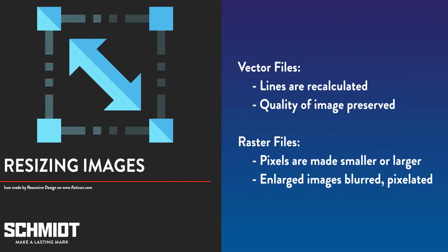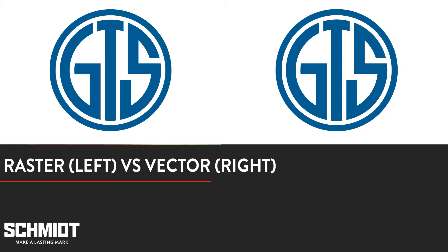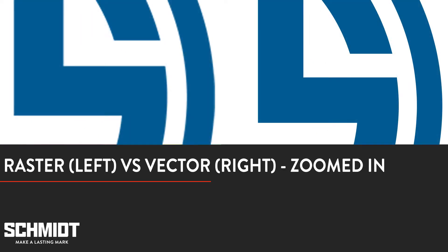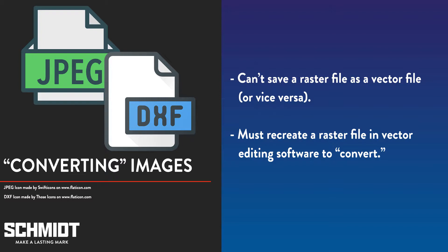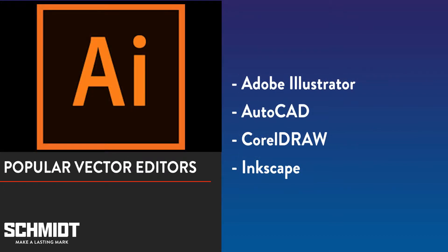Vector files are images in which software calculates and draws lines or vectors between points. Some of the most common types of vector files include encapsulated PostScript and drawing exchange format files. When you resize a vector file the software redraws the lines between the image's points, so you can make the image larger or smaller without affecting quality. The quality of a raster image, on the other hand, is limited by its resolution — if you enlarge it too much it will look blurry and pixelated. Note that you can't turn a raster image into a vector image by simply changing the file extension. You'd have to recreate it in vector editing software such as Adobe Illustrator, though some software may include conversion tools with varying results.